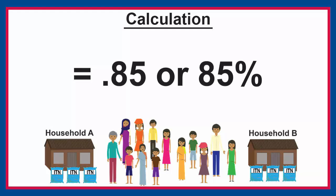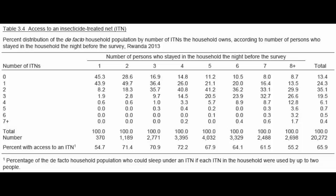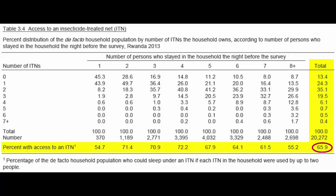In the DHS Program final reports, ITN access estimates can typically be found in the table titled 'Access to an Insecticide-Treated Net.' This table is from the 2013 Rwanda Malaria Indicator Survey. The percent of the population with access to an ITN is presented in the last row in the final column, the total percentage shown here. We can see that 65.9% of the household population in Rwanda has access to an ITN.